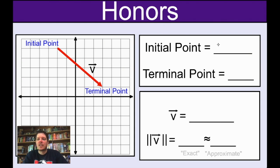So because they're just dots on a graph, what we need to do is we need to just write down the ordered pair. The initial point ordered pair is negative two because it's left two from the origin and then up five. So the ordered pair for the initial point is negative two, five.